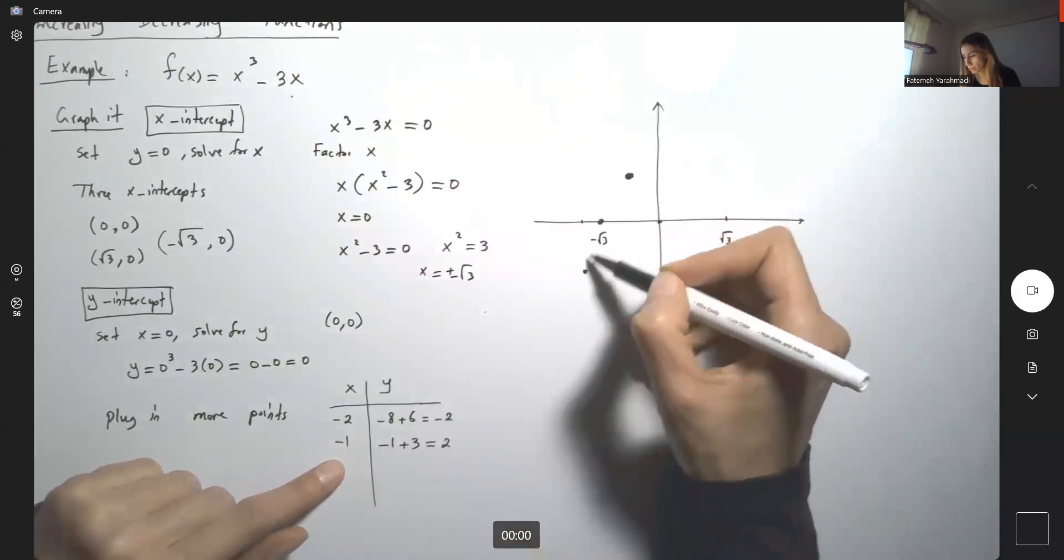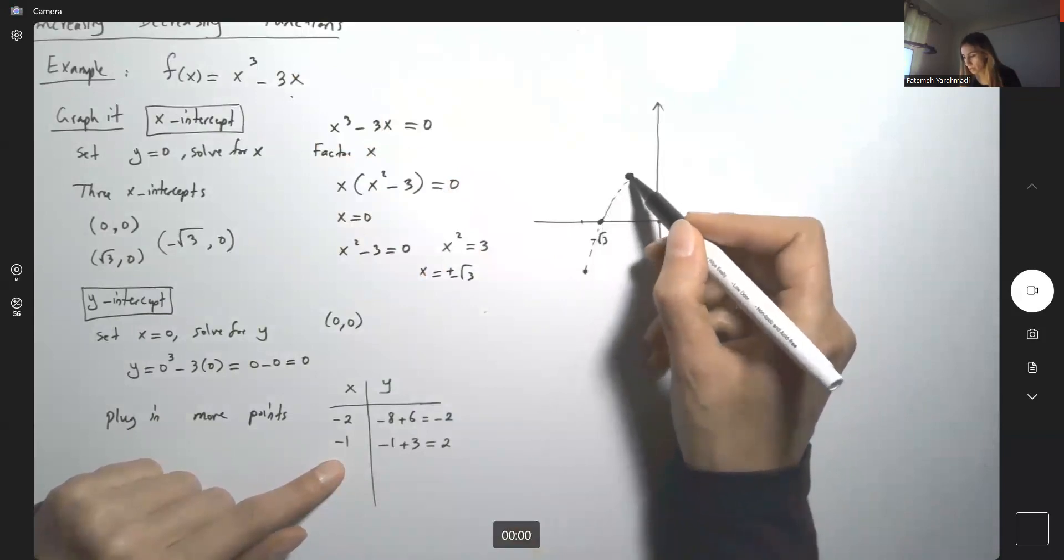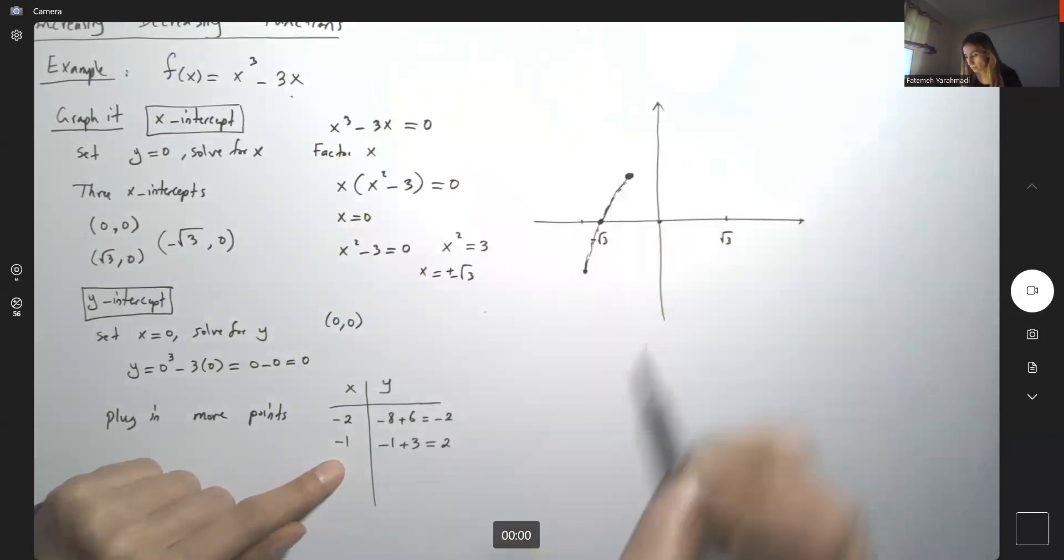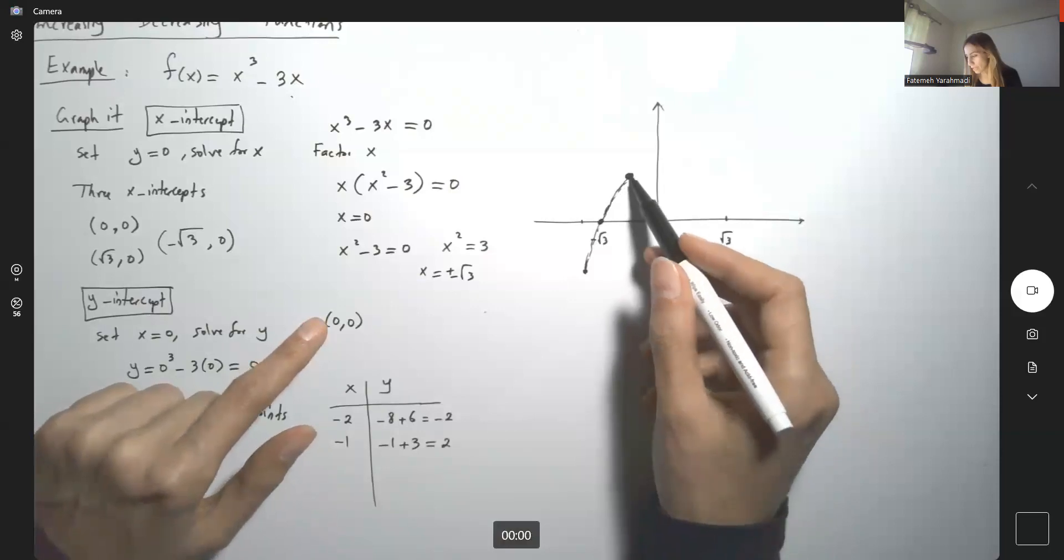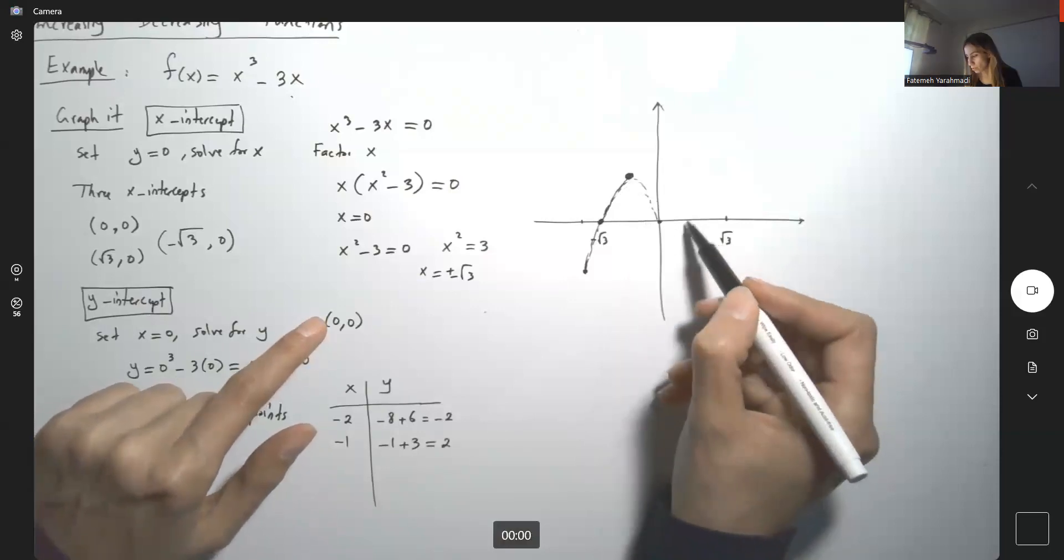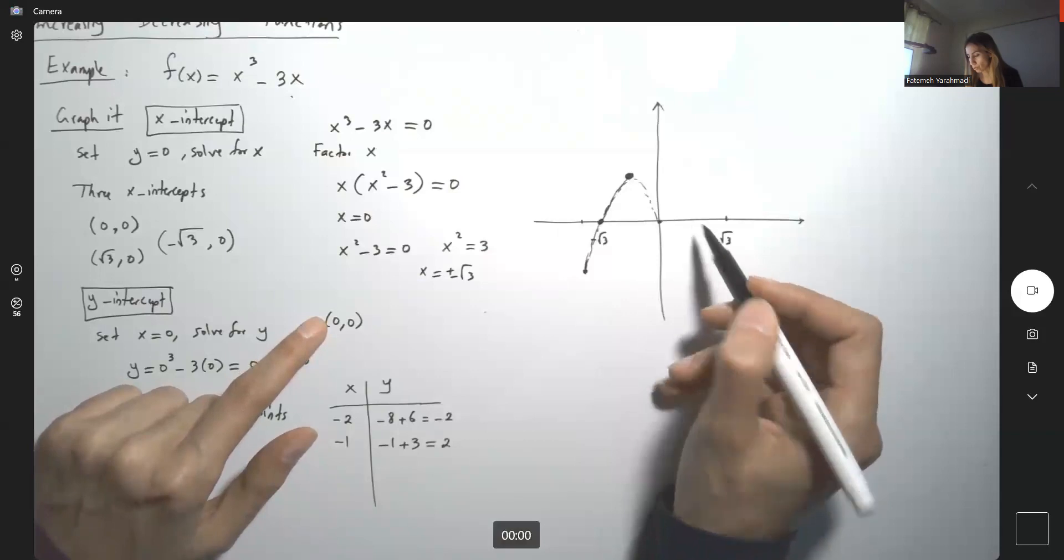So far I have these three points. If I connect them, it behaves like this. I know at 0 I have 0, so it goes down here. Let me plug in some values like 1.